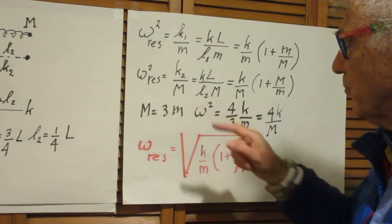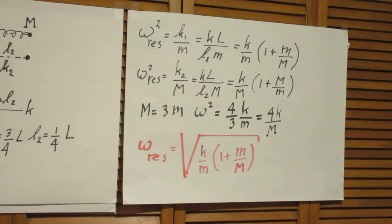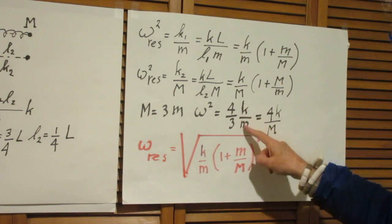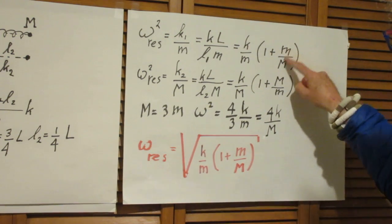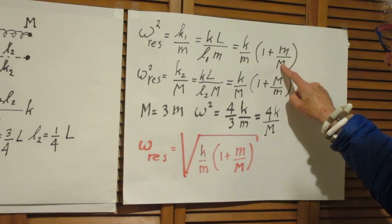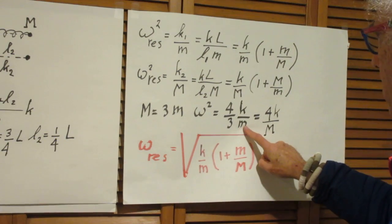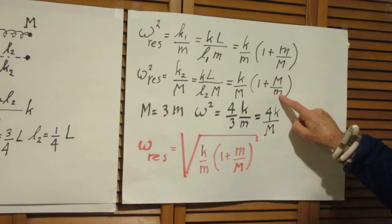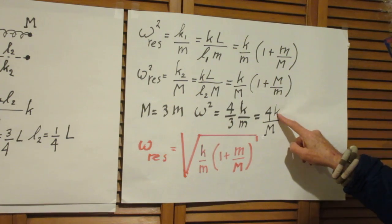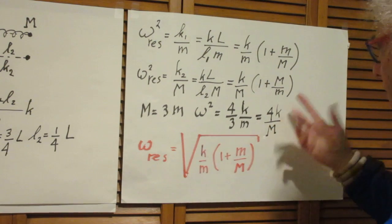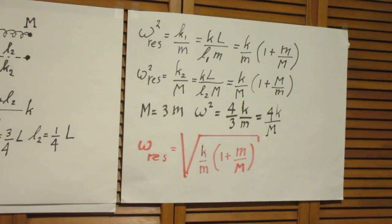Let's take the case that M is 3m. Capital M is 3 lowercase m. That would mean that omega squared would be 4 third K over m. Capital M over m is 3. 1 plus 3 is 4. Capital M is 3m. 4K over 3m would be fine. 4K over capital M is also fine. So, it is clear that both frequencies are the same. And that of course is only logical because we only calculate the resonance frequencies.